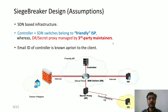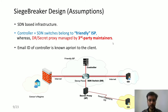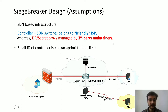Moving to the design of Siege Breaker: as seen in the diagram, the friendly ISP deploying the decoy routers has an SDN switch together with a controller that can update its flow table entries, and there is a secret proxy analogous to the DR proxy. Importantly, the controller and SDN switches belong to the SDN ISP, whereas the secret proxy is managed by third-party maintainers — analogous to Tor relays — and can be located anywhere on the internet. We also assume the Siege Breaker client already has the controller's email address before initiating the decoy routing session.